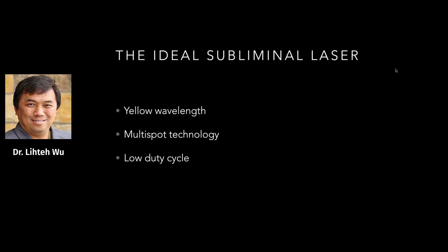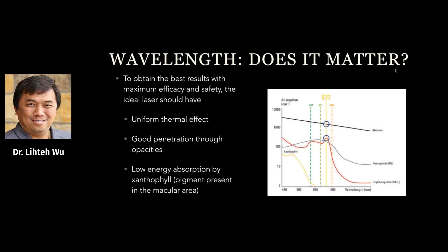What is the ideal subliminal laser? The ideal subliminal laser has to have a yellow wavelength, multi-spot technology, and a low duty cycle. In terms of wavelength — does it matter? To obtain the best results with maximum efficacy and safety, the ideal laser should have a uniform thermal effect, good penetration through opacities, and low energy absorption by the xanthophyll, which is the pigment present in the macular area.